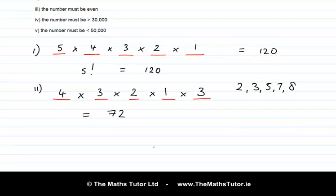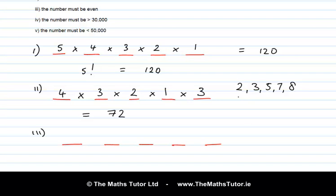Now Scenario 3: the number must be even. Again, 5 slots. The number must be even, so the final digit must be an even digit. We deal with that first. From 2, 3, 5, 7 and 8, we've only got two even digits — 2 and 8 — so 2 choices for the last slot. Then we go back and fill the other slots: 4 choices, then 3, then 2, then 1. Multiplying: 4 × 3 × 2 × 1 × 2 = 48 arrangements that are even.